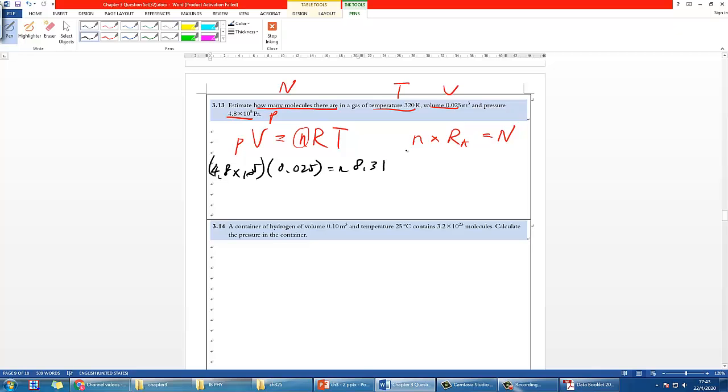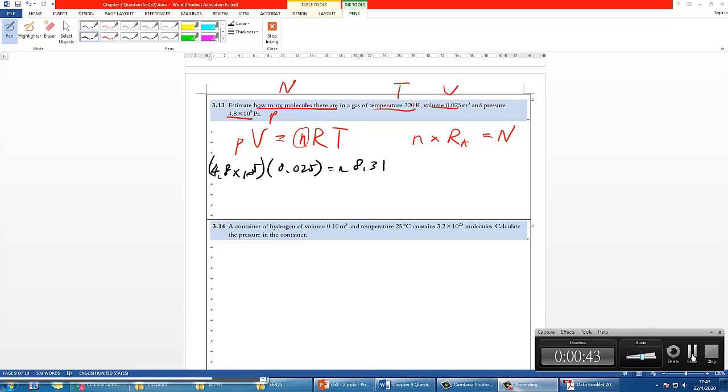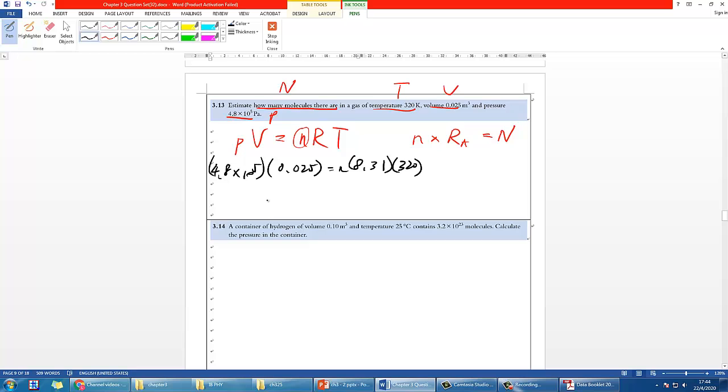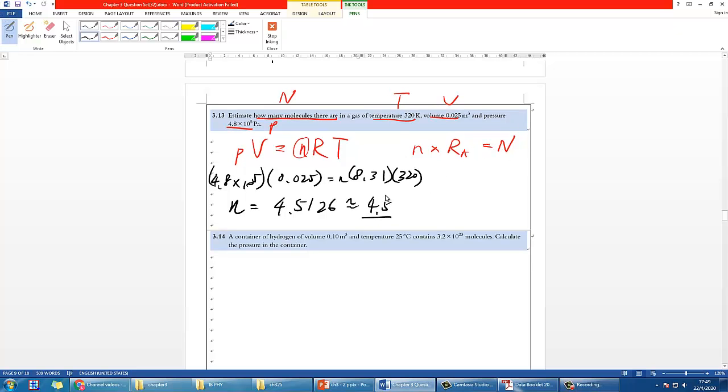Substitute the rest. After calculation with your calculator, you should find number of moles n should be around 4.512, roughly 4.5. After you get the answer, then you can multiply the Avogadro constant, which is 6.02 times 10 to power 23.